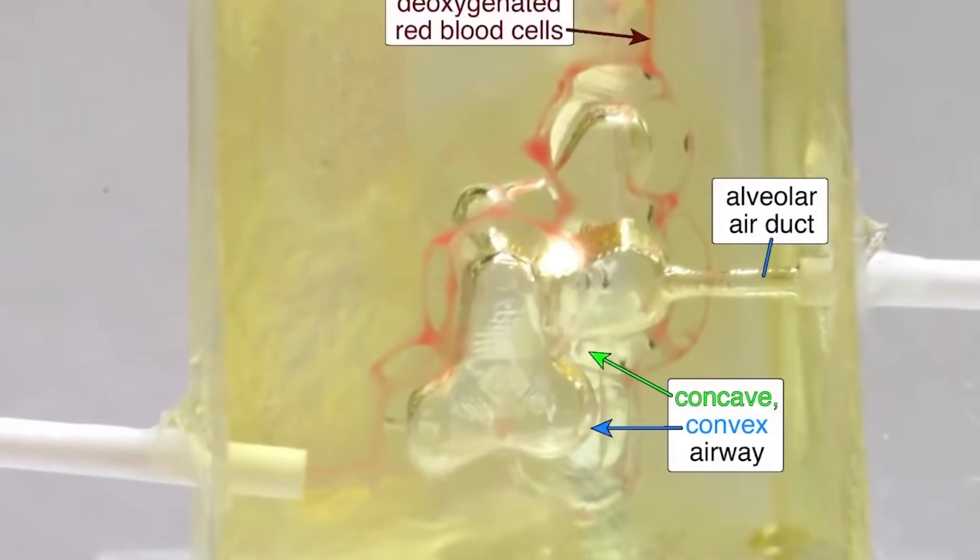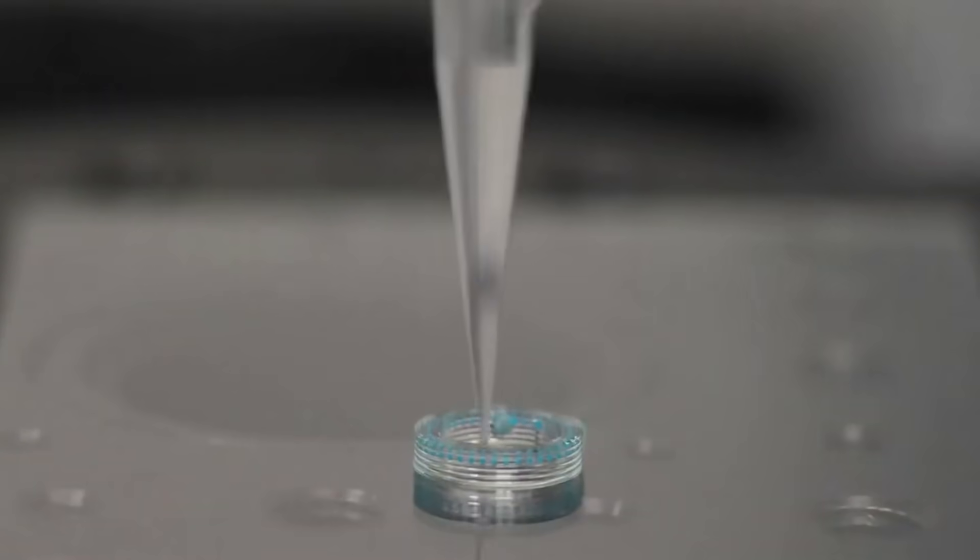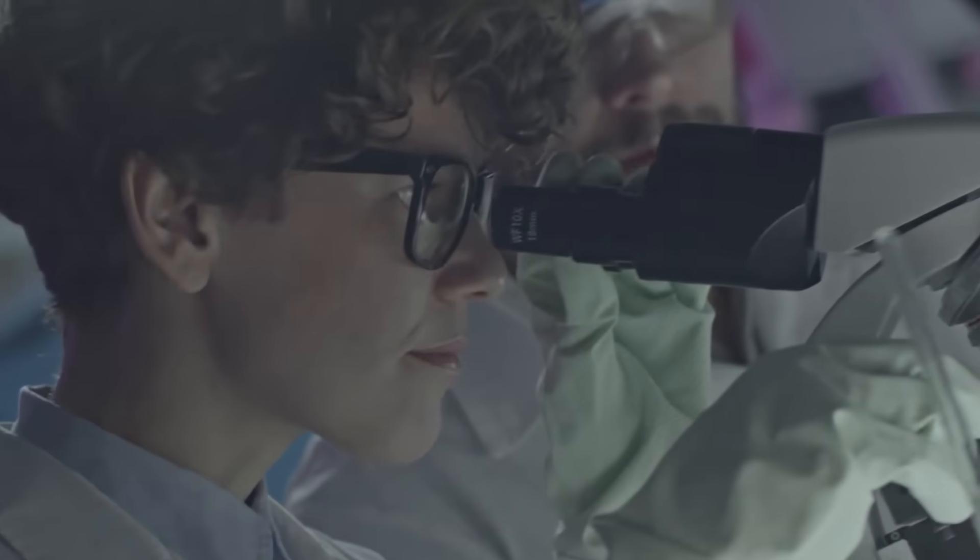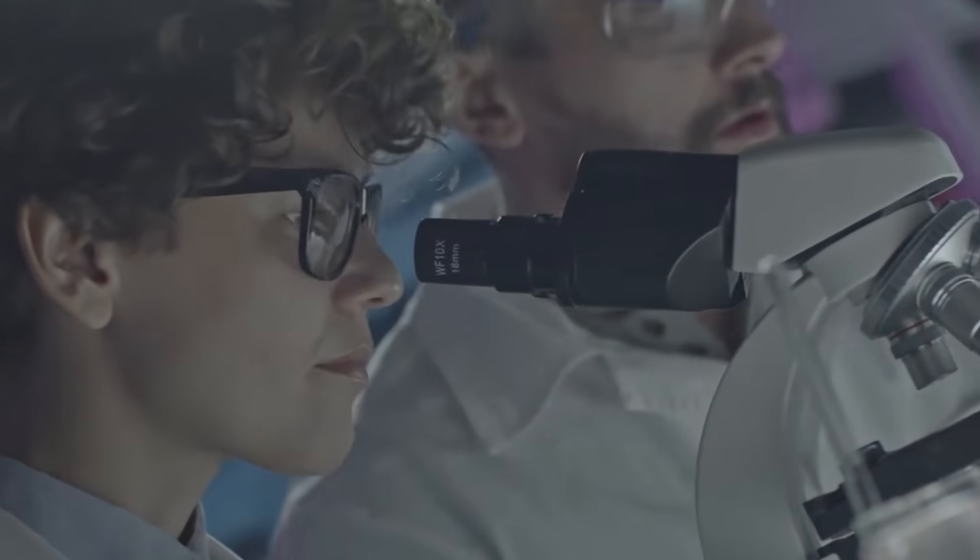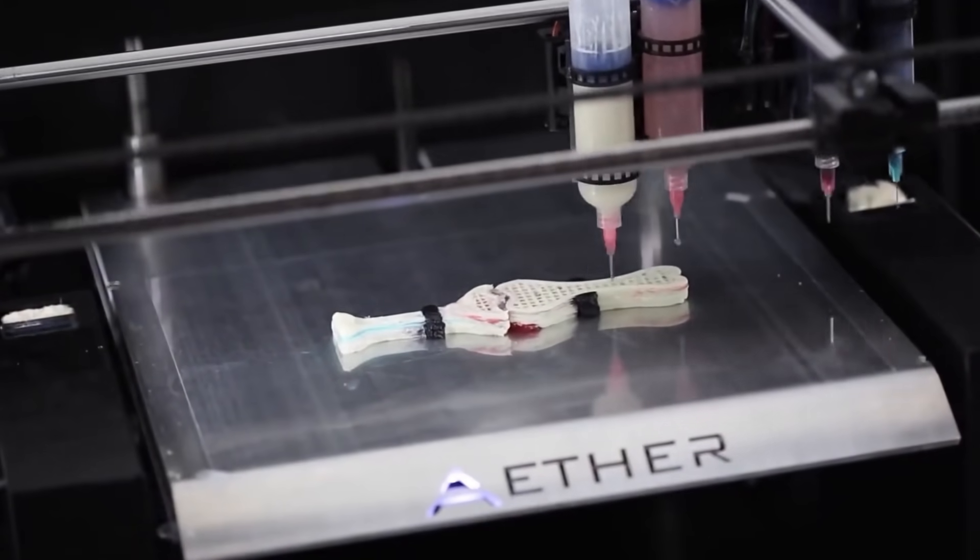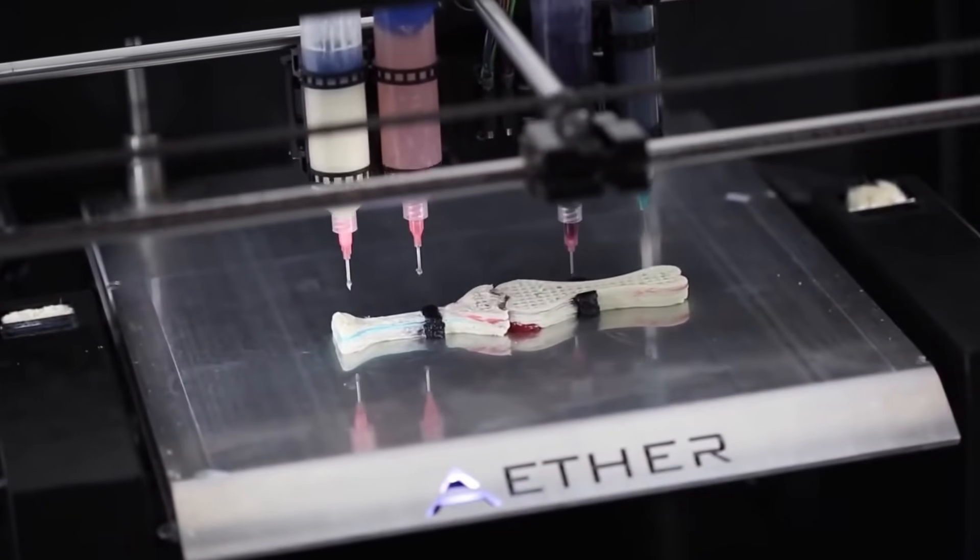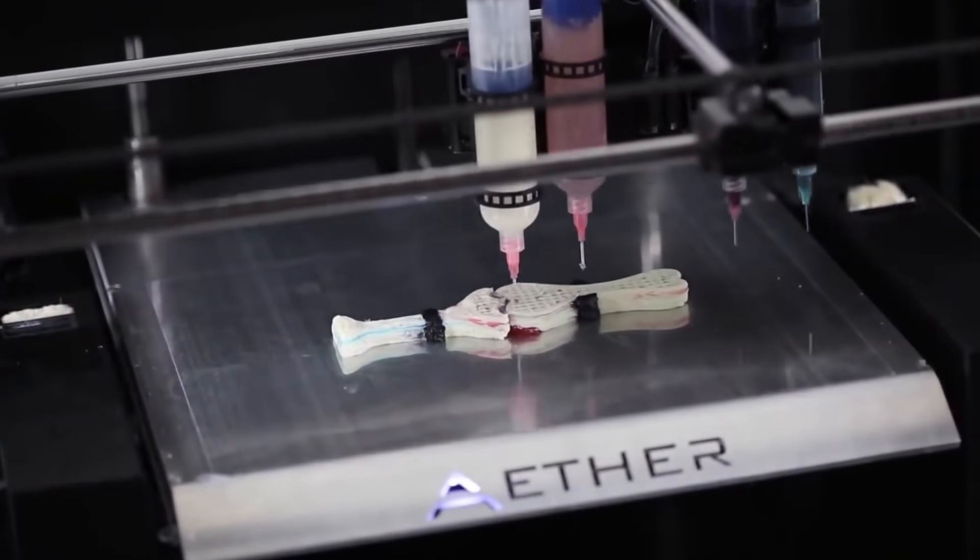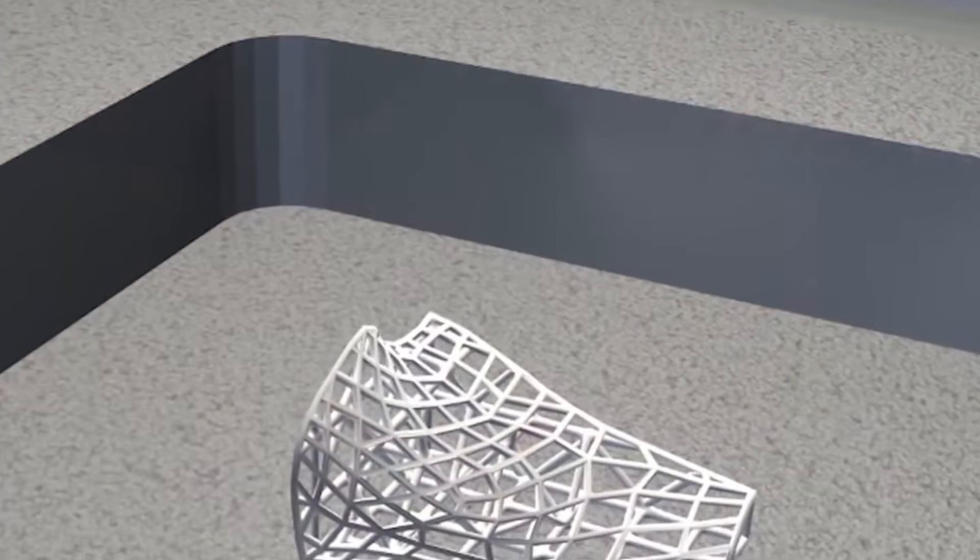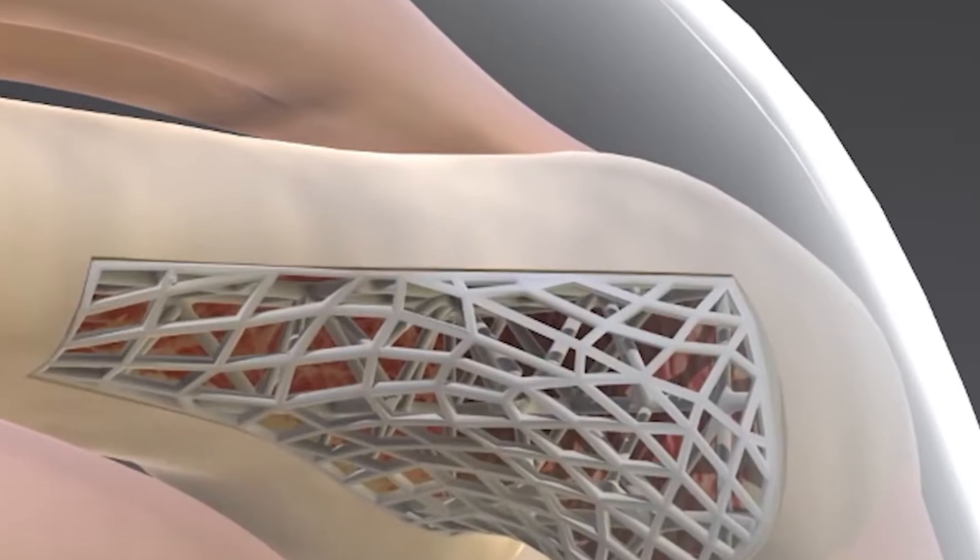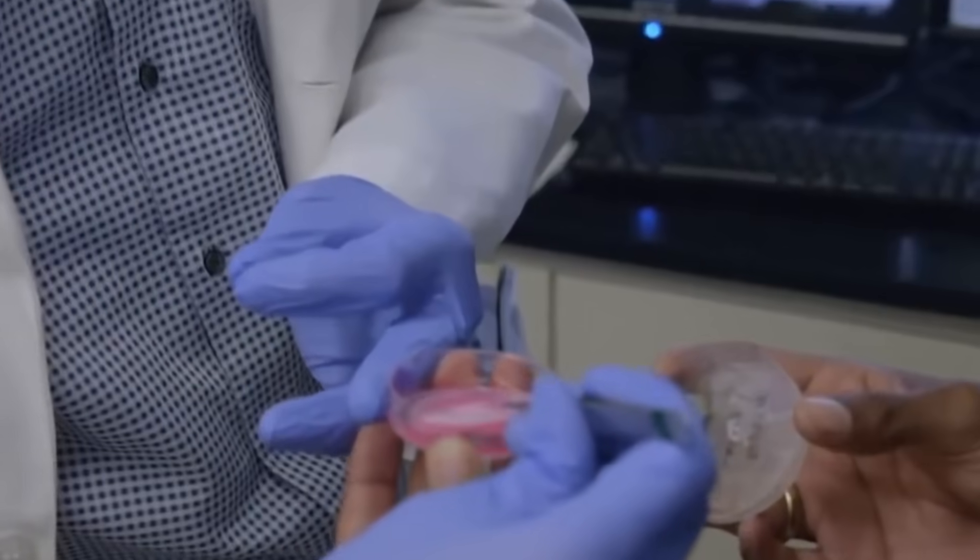One of the key advantages of 3D bioprinting is the precision it offers, enabling the creation of complex tissue architectures that closely mimic natural human organs. Researchers are also exploring methods to integrate blood vessels and nerve networks into bioprinted tissues, which are critical for organ functionality. This technology has the potential to transform regenerative medicine by providing alternatives to organ transplants and enabling patient-specific treatments tailored to individual biological requirements.